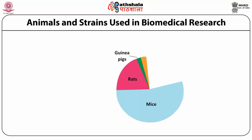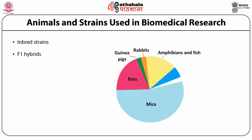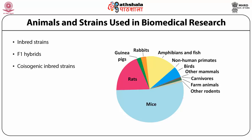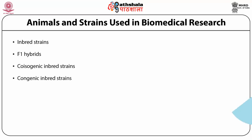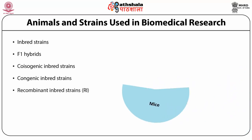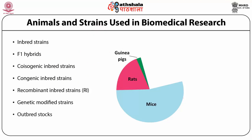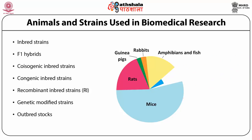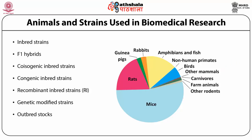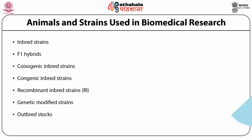The strains used in biomedical research include inbred strains, F1 hybrids, coisogenic inbred strains, congenic inbred strains, recombinant inbred strains, genetically modified strains, and outbred strains. In the case of mouse, we can modify so many genes according to the research or type of mutations required.